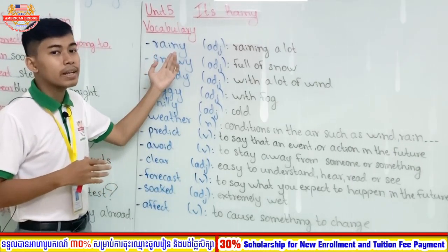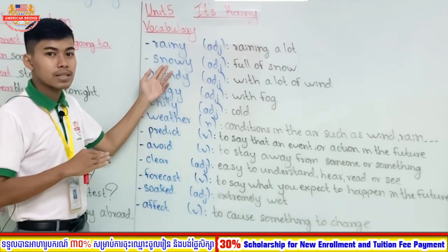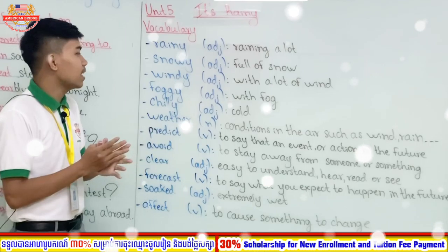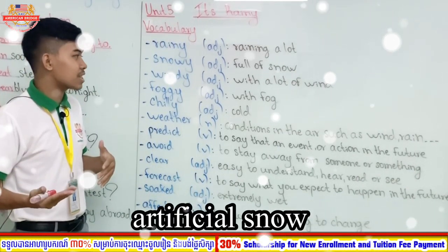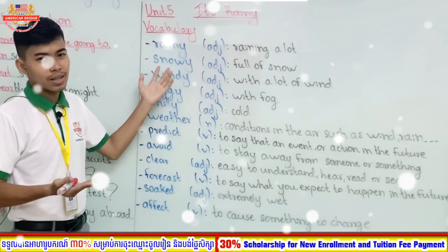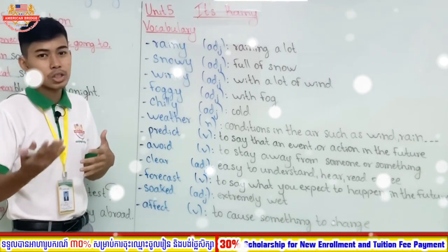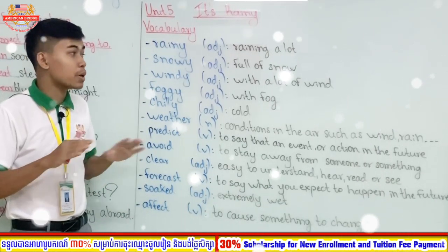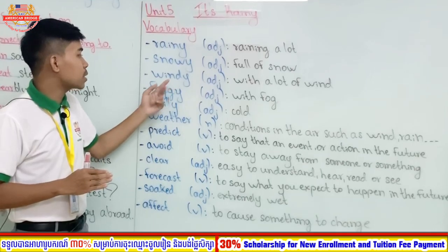The second word is 'snowy.' Snowy is an adjective meaning full of snow, or a lot of snow. In Cambodia we don't have snow — maybe at Aeon Mall you can see artificial snow, but not in real life. When you go to European countries like England, Spain, Germany, Russia, China, Korea, or America and they say it is snowy, it means snow is falling and there is a lot of snow.